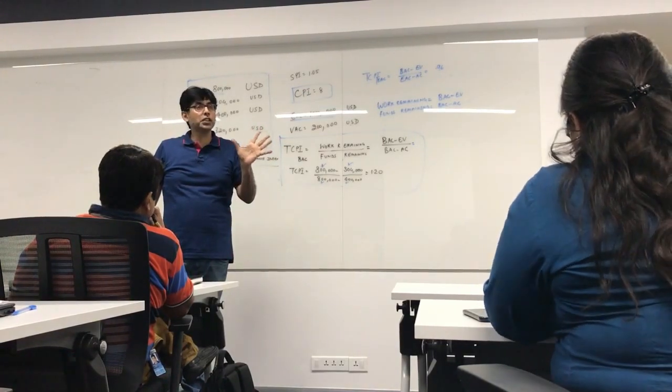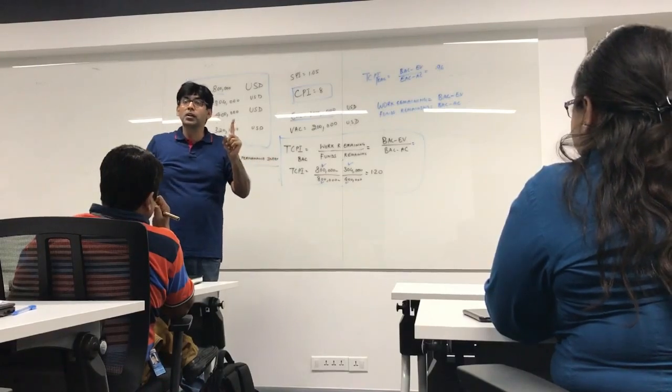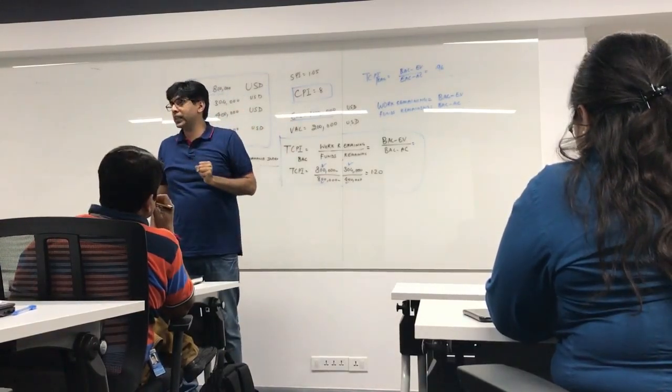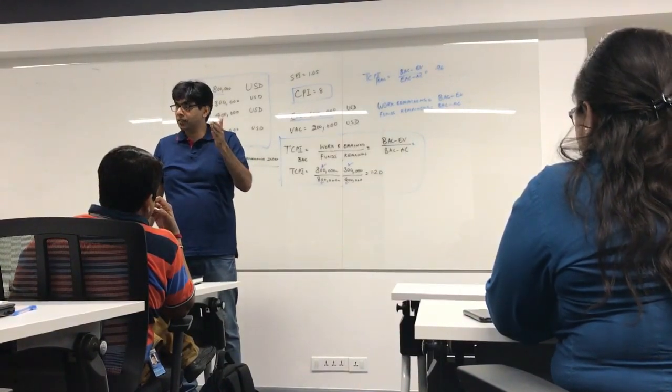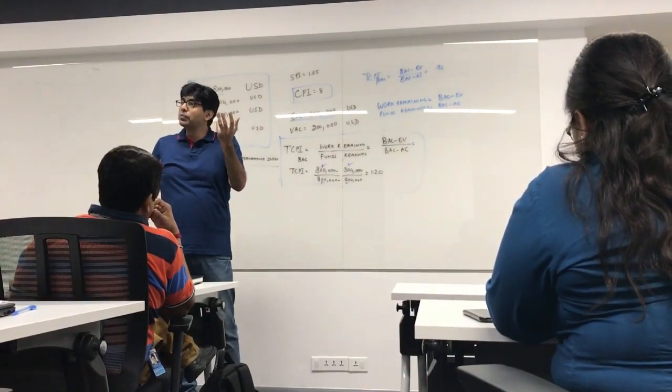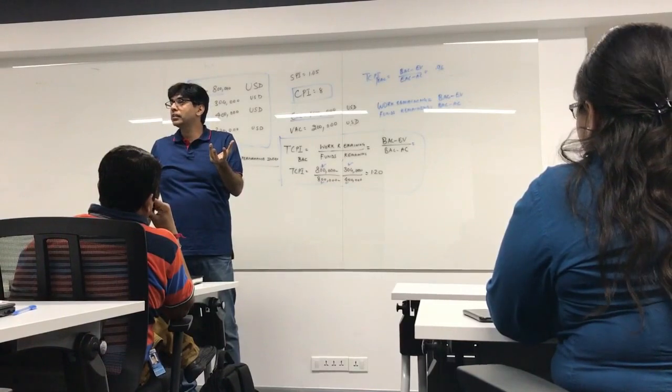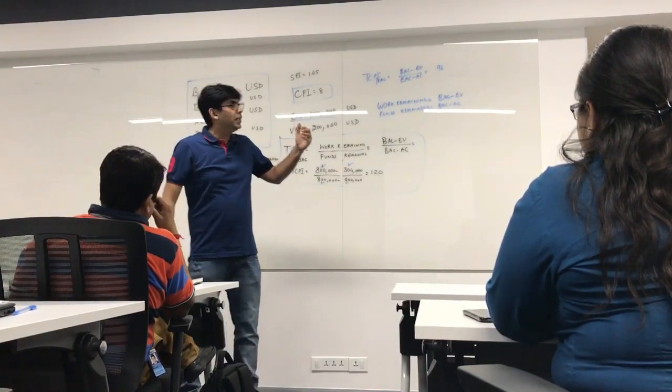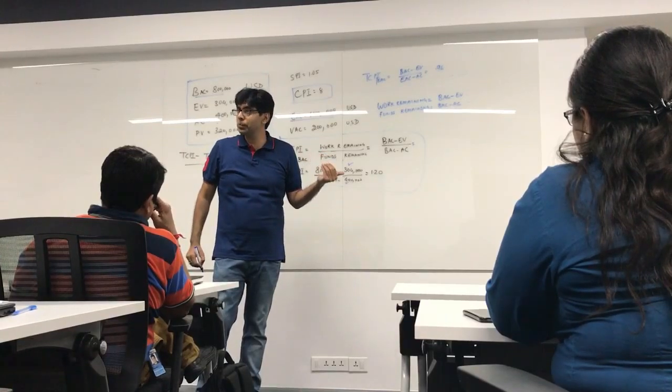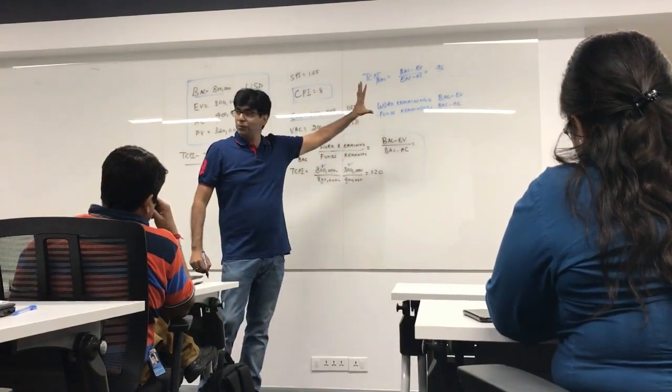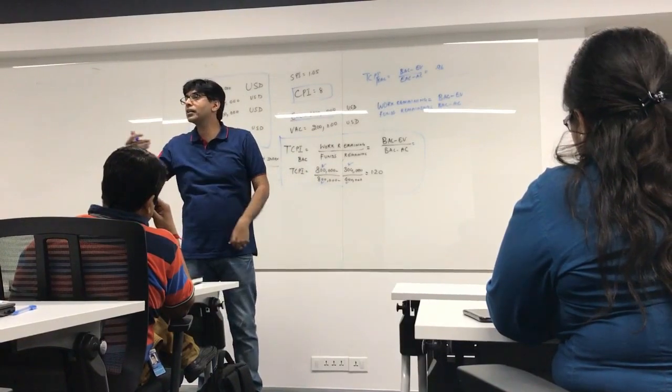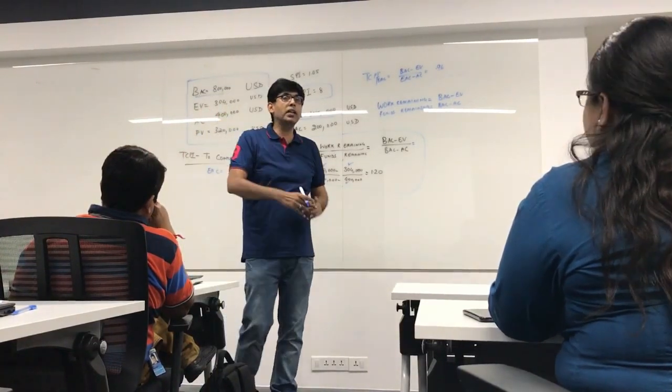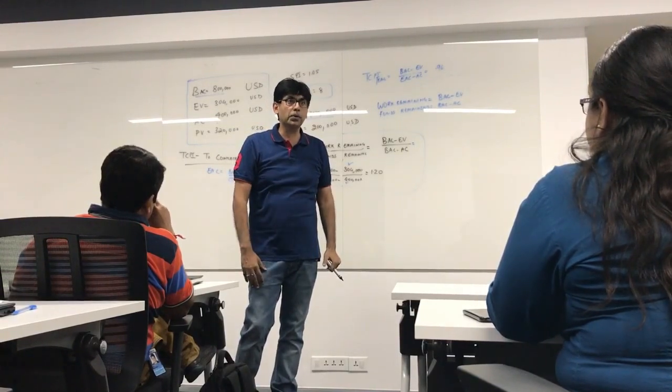Right? Which is fair amount of improvement. Right? Now, if my boss gives me 100,000 USD extra, I can hit the target provided I improve my CPI by around 0.16. This is EAC based TCPI. Now, you know, I should be confident I can go to my boss and say that, okay, give me 100,000 extra. I will also improve. Right? So, that way you can renegotiate with your boss.